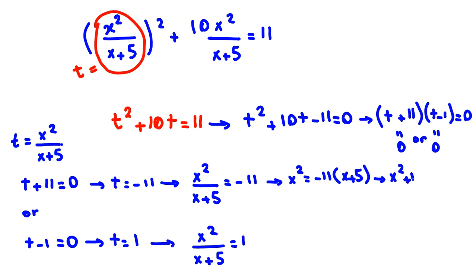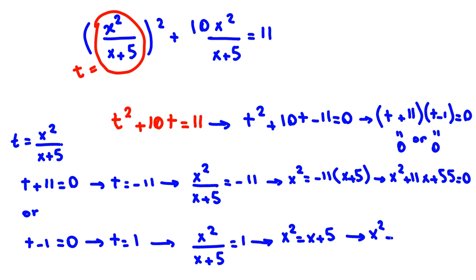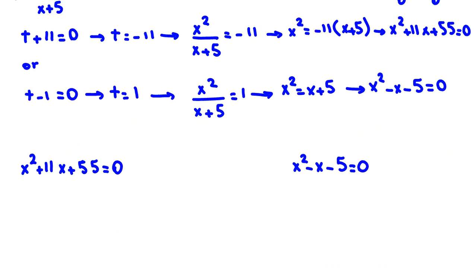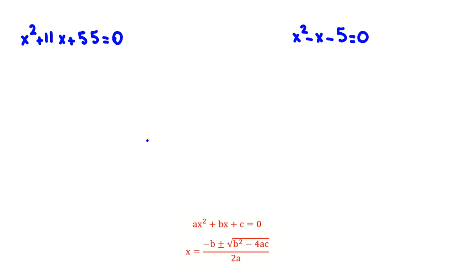For Case 1, cross-multiplying gives x squared equal to negative 11(x plus 5), so x squared plus 11x plus 55 equal to 0. Using the quadratic formula, we check the discriminant b squared minus 4ac: here b is 11, a is 1, c is 55. The discriminant is 121 minus 4 times 55, which is 121 minus 220, equal to negative 99. Since the discriminant is less than zero, there are no real solutions in Case 1.